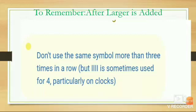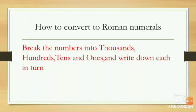But IIII is sometimes used for 4, particularly on clocks. How to convert to Roman numerals? Break the numbers into 1000, 100, 10, and 1, and write down each in turn.